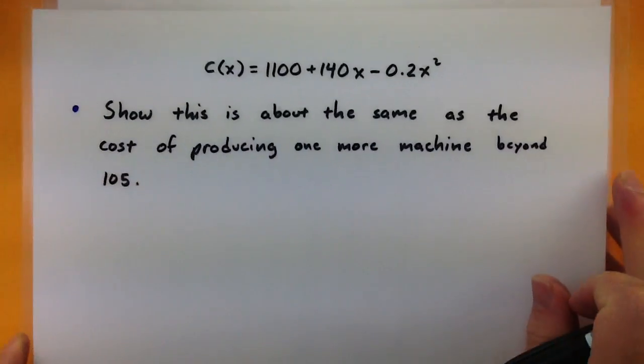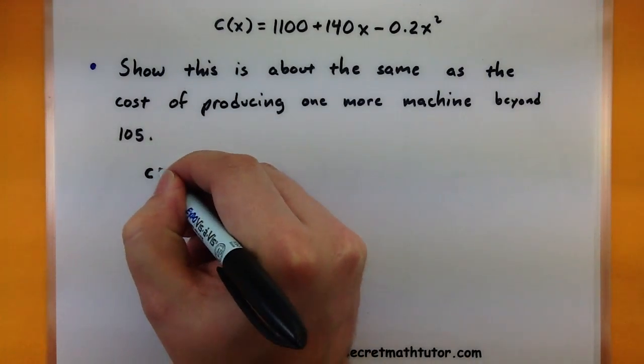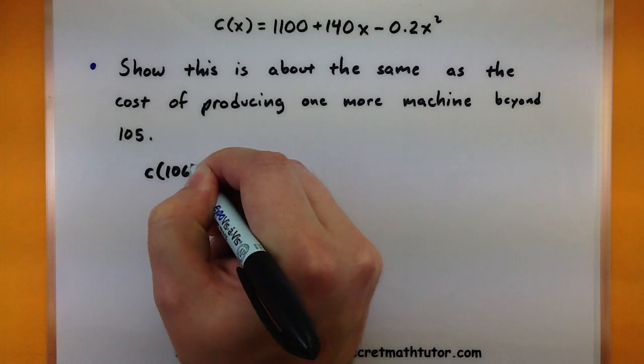We want to show that this 98 dollars is about the same as the cost of producing just one more machine beyond the 105. So essentially, we're looking at what's the change in cost between producing 106 machines and 105 machines. So we first need to figure out, well what is the cost of producing 106 machines?